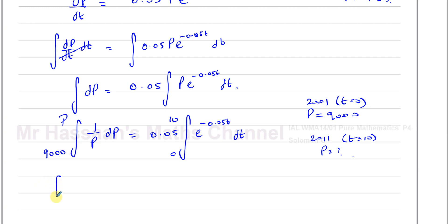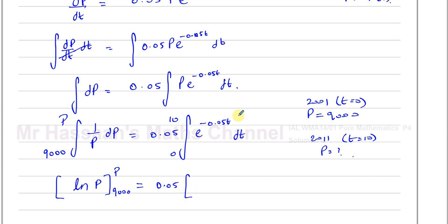Integrating the left side: 1 over p with respect to p gives ln of p, evaluated with limits from 9,000 to p. Since population is always positive, I don't need the modulus sign. On the right side: 0.05 times the integral of e to the power of negative 0.05t gives e to the power of negative 0.05t divided by negative 0.05, evaluated with limits 0 to 10. So we have 0.05 divided by negative 0.05 times the exponential terms, giving a factor of negative 1 outside the brackets.